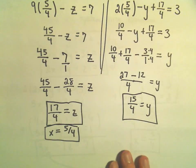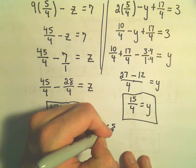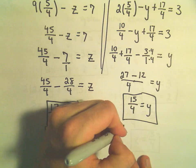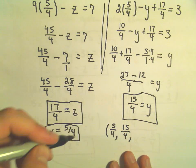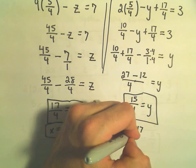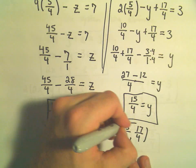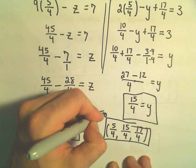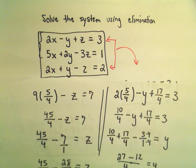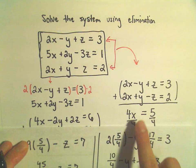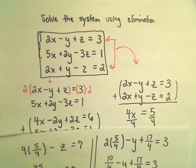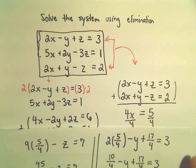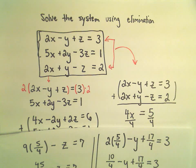So we now have our solution. It says x would have to be 5 fourths, y would have to be 15 over 4, and the z value would be 17 over 4. So this one, again, was a little nicer just because simply when we did this second step, actually two of the variables immediately canceled out. So it certainly made life a little bit easier in this example.